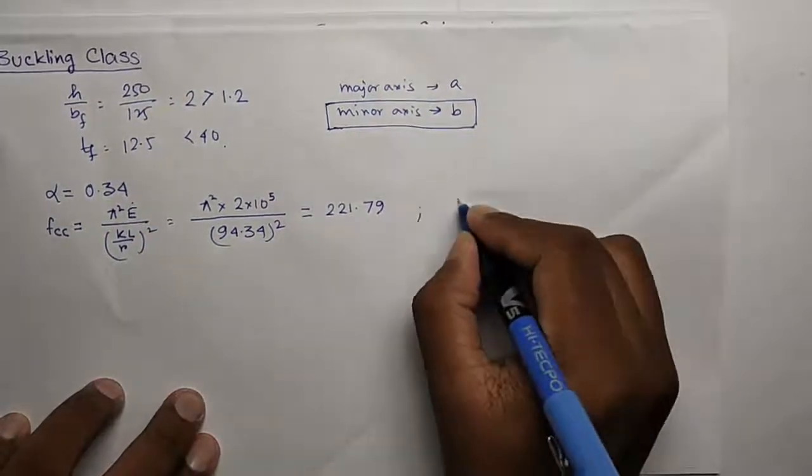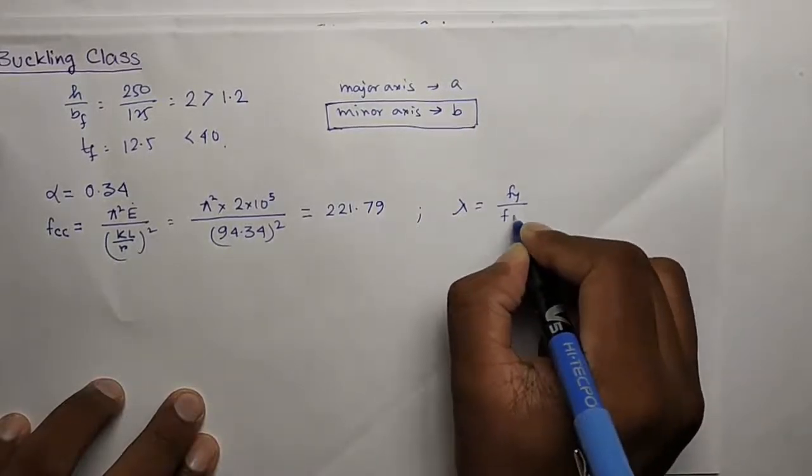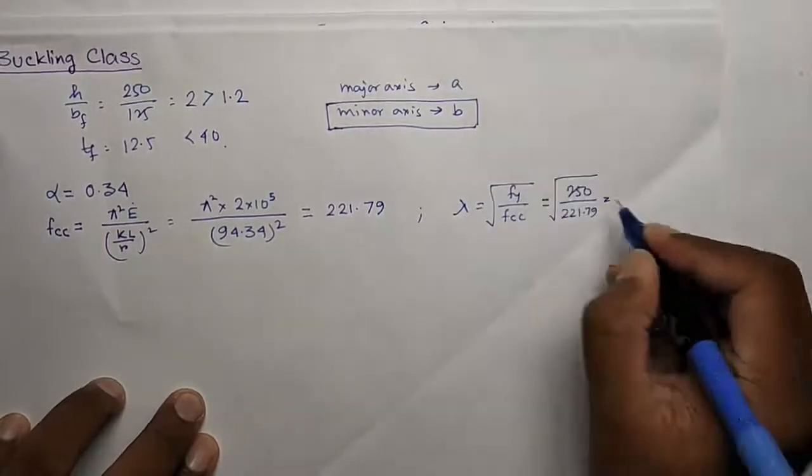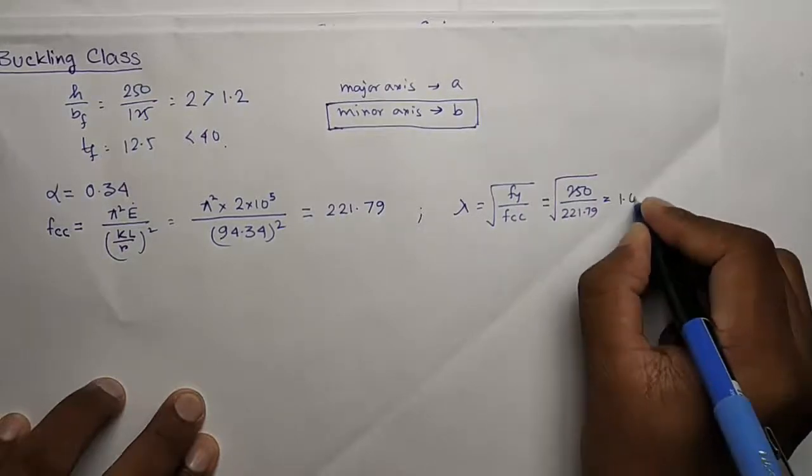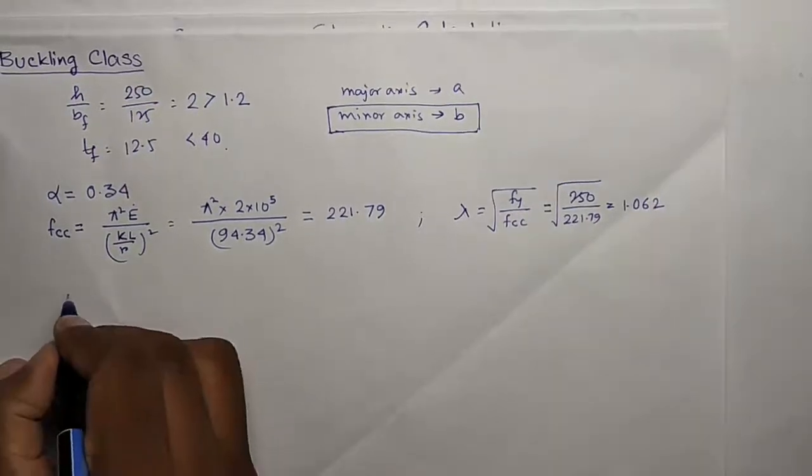Now calculate lambda which is the square root of Fy by FCC. You will get 1.062. So now you can calculate the phi.